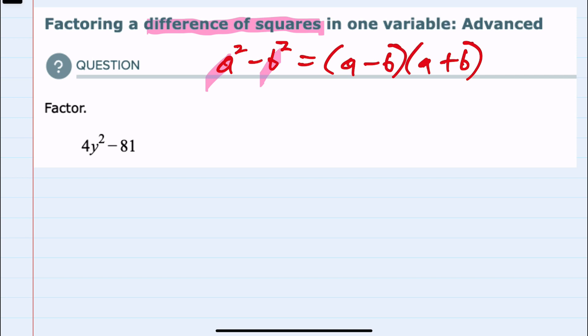And for this example I need to be able to write it as something squared minus a second term squared. The first term, 4y squared, if I were going to write it as something in parentheses being squared, that would be a 2y quantity squared.